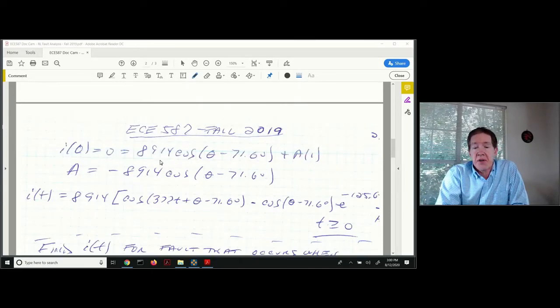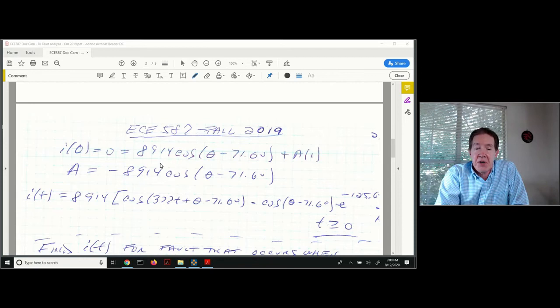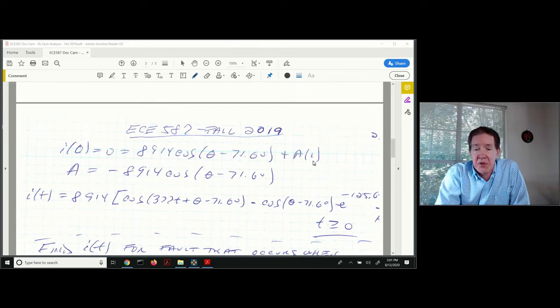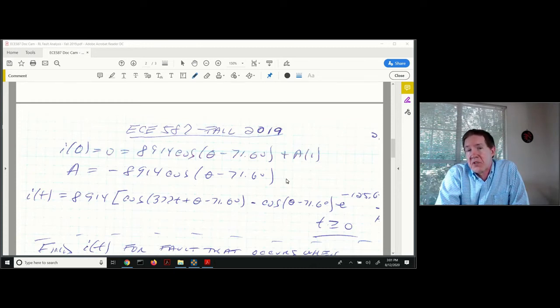So I(0) equals zero. Plug in t equals zero. I've got 8,914 cosine with the argument theta minus 71.6 degrees plus A evaluated at that exponential when time equals zero. That whole exponential term is just equal to one. This gives me the expression for A. Basically, A is kind of the complement of the coefficient—it's minus whatever the coefficient is on the steady state part.